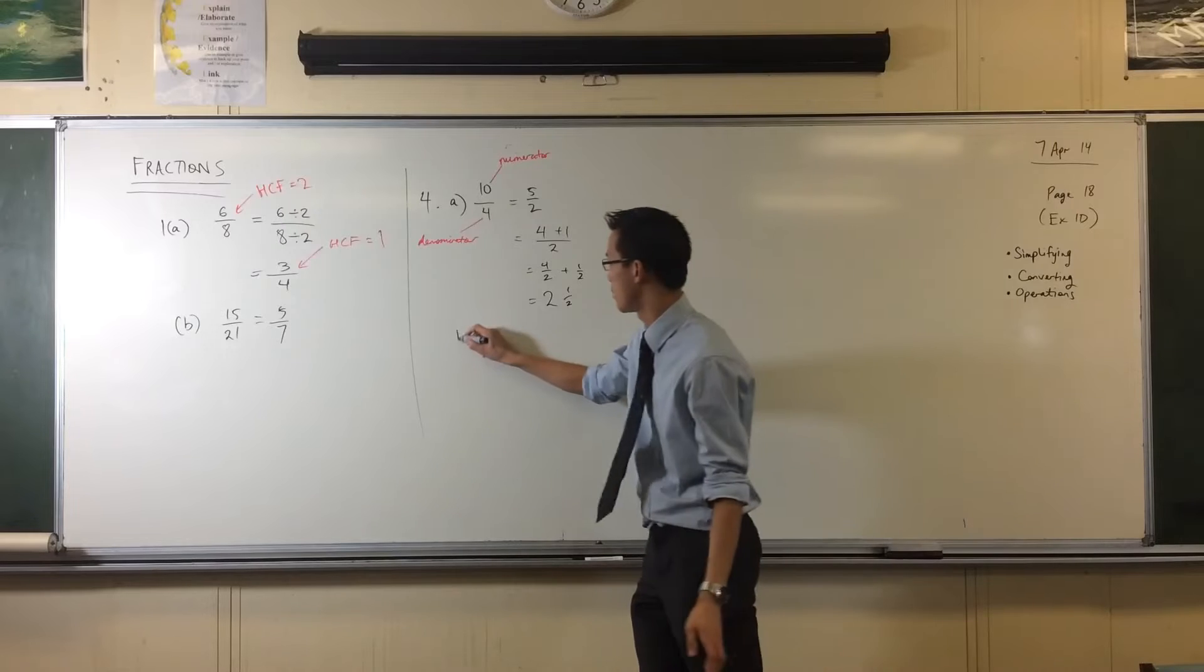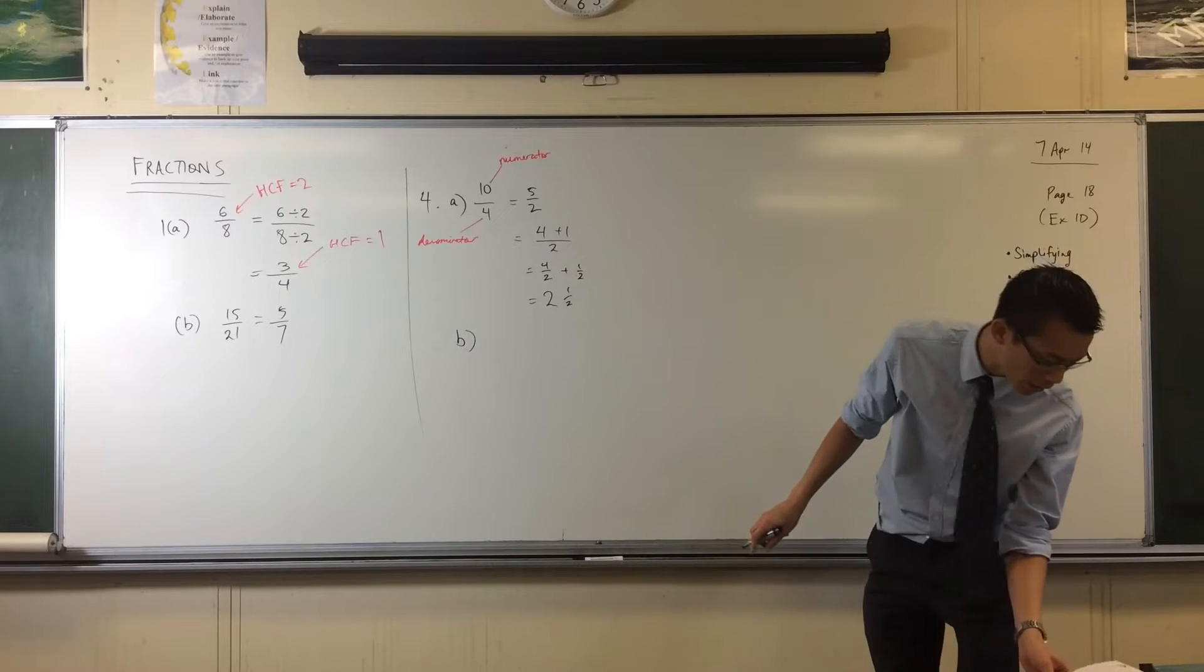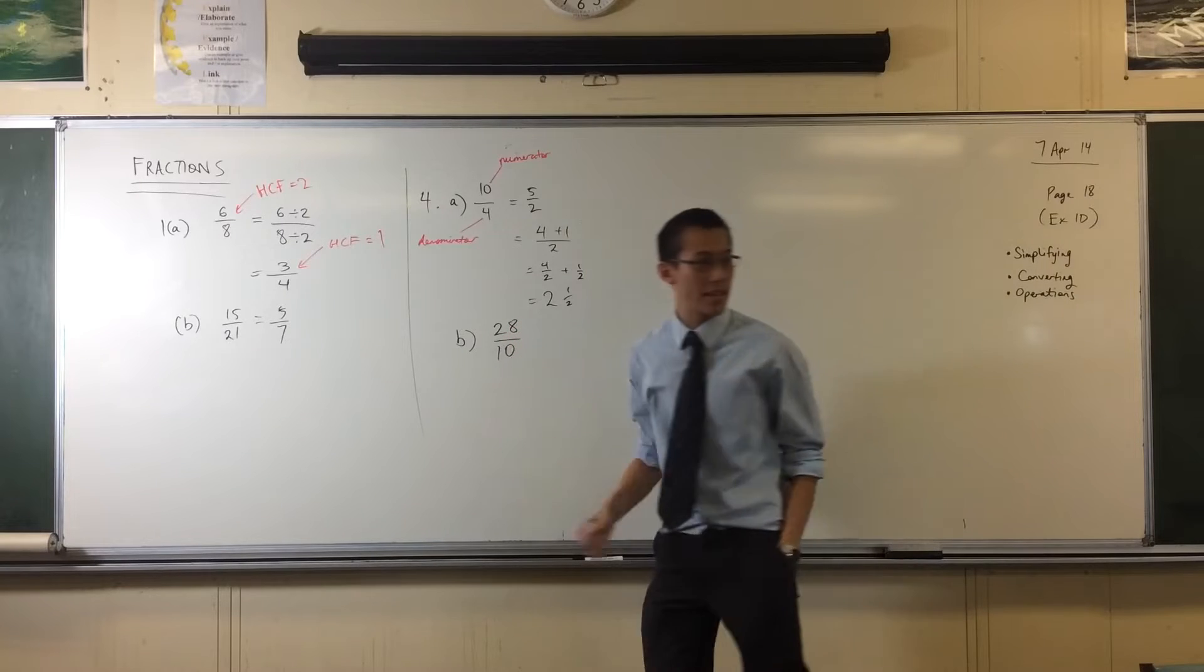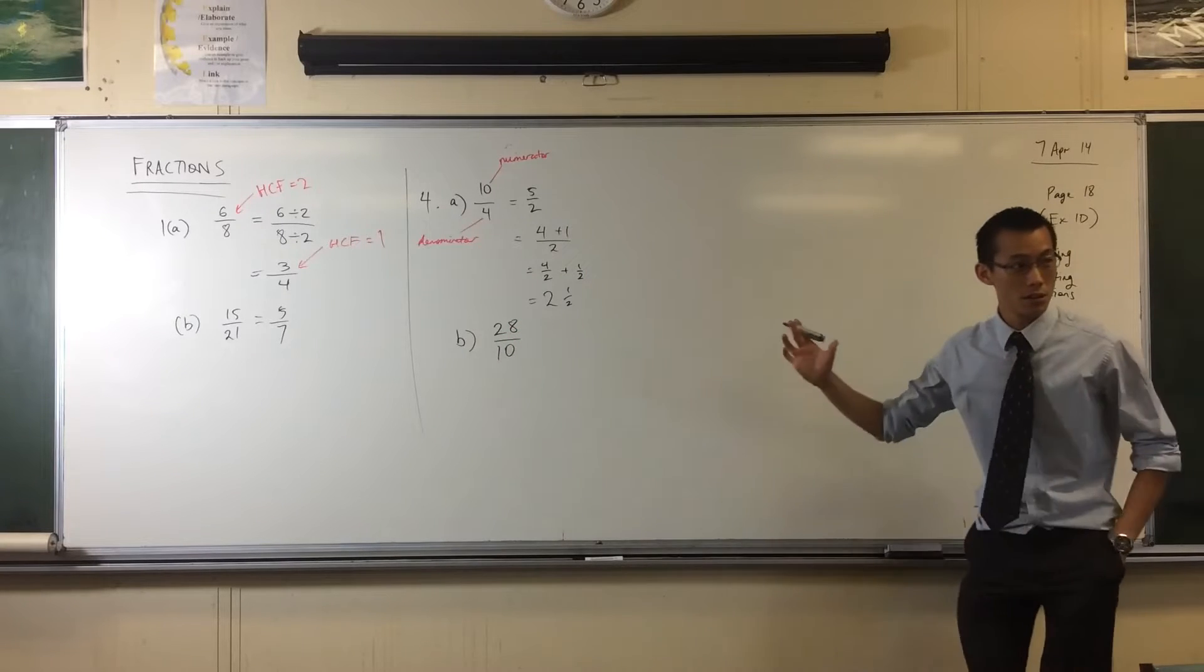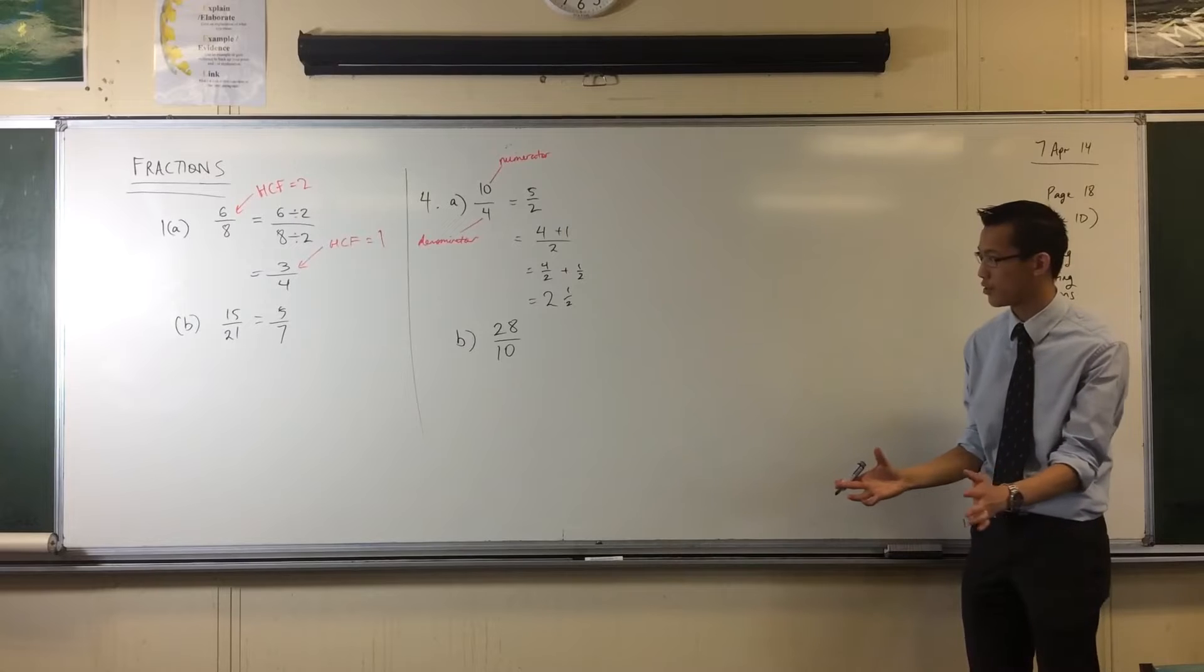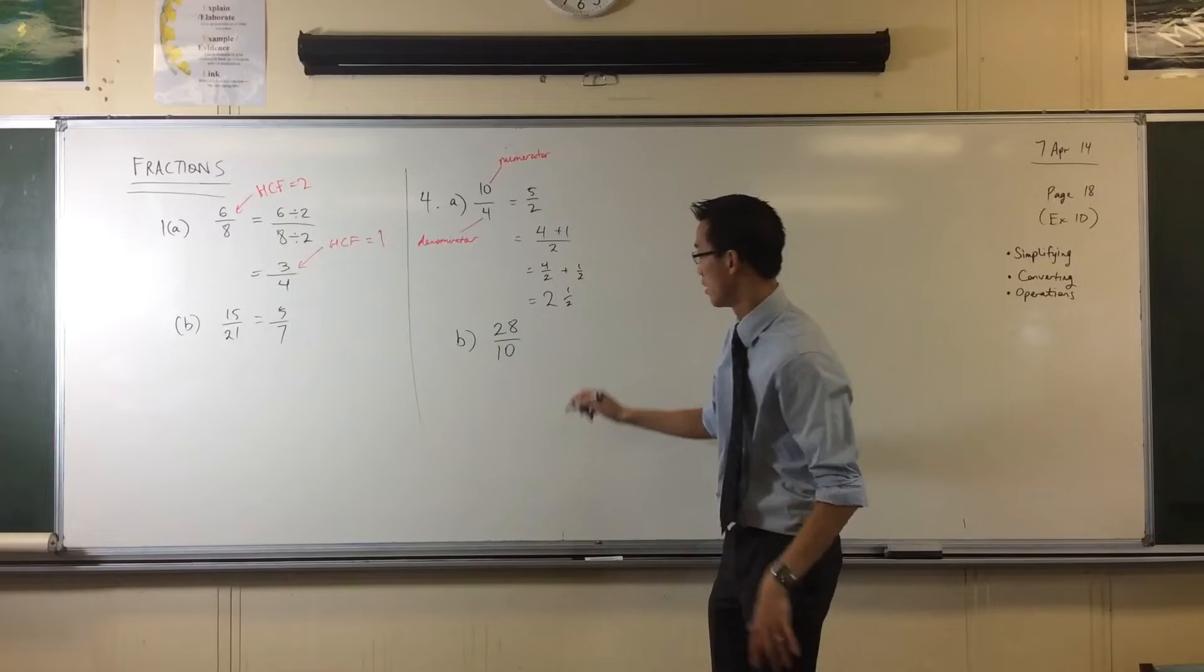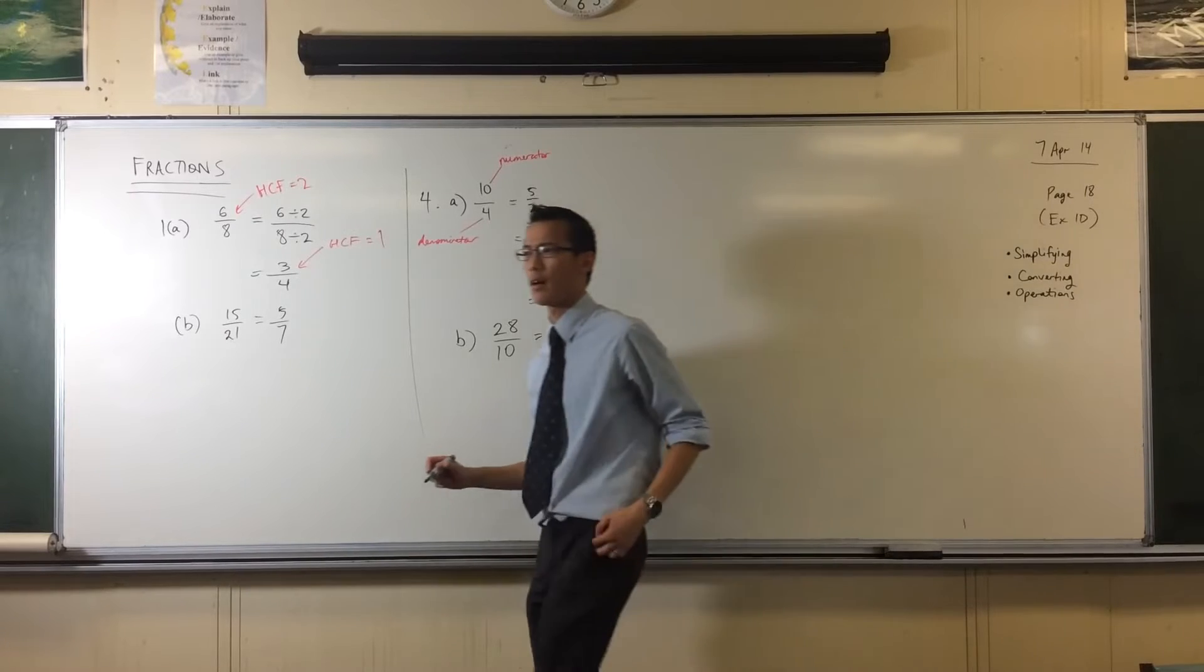We can do B, but B is still harder. So what we've got here is 28 over 10. So like I said, the very first step is simplify. Don't do anything before you simplify because once you simplify, the numbers are all nice and small. Much easier to work with. So what's my highest common factor? Two.